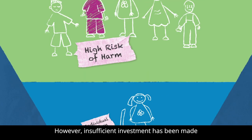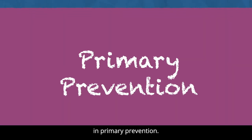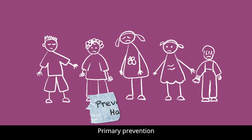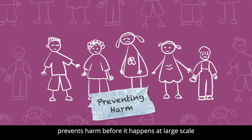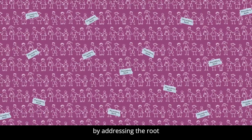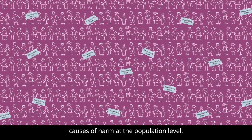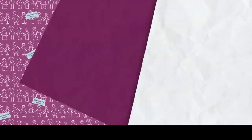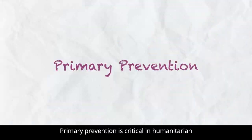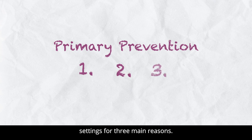However, insufficient investment has been made in primary prevention. Primary prevention prevents harm before it happens at large scale by addressing the root causes of harm at the population level. Primary prevention is critical in humanitarian settings for three main reasons.